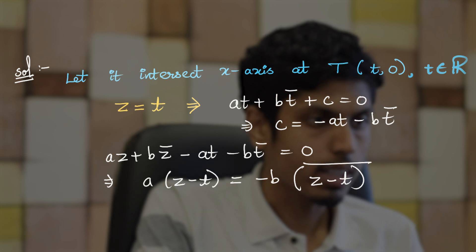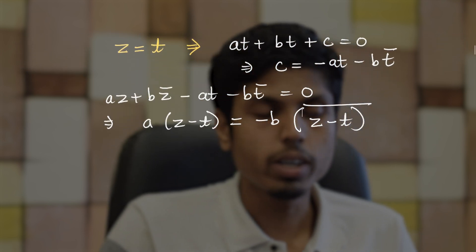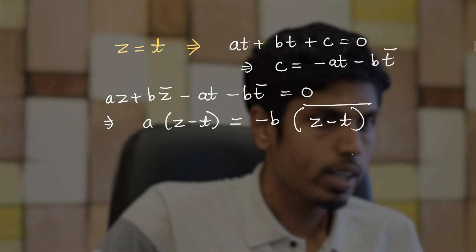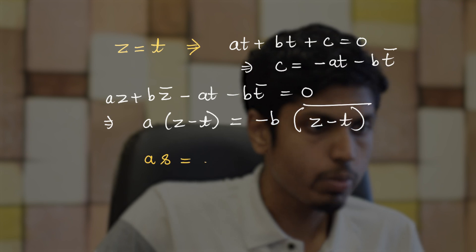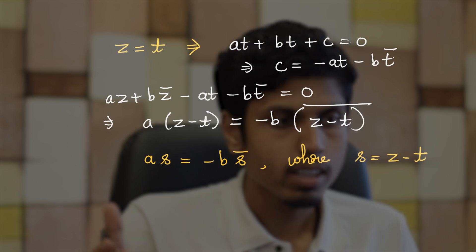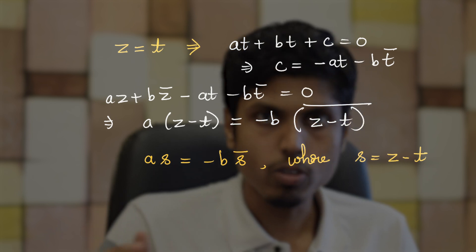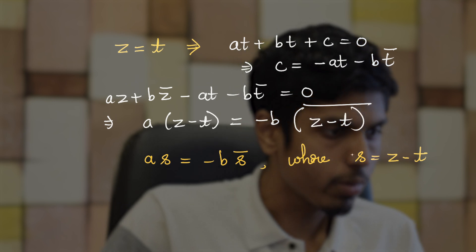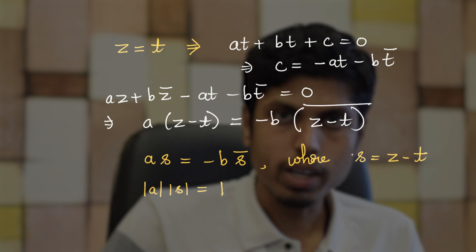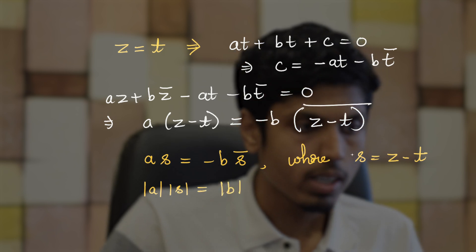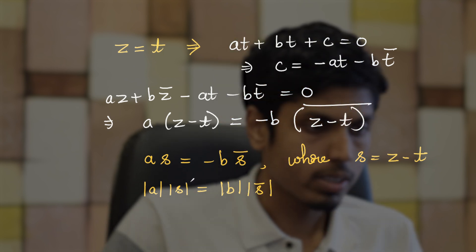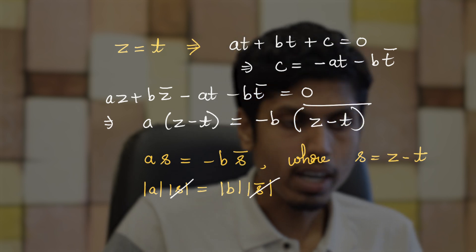We use the fact that z̄ − t̄ = conjugate of (z − t). Now substitute s = z − t, giving as = −bs̄. Taking modulus on both sides: |a|·|s| = |b|·|s̄|. Since s and s̄ are complex conjugates, their magnitudes are equal — both equal √(x² + y²).